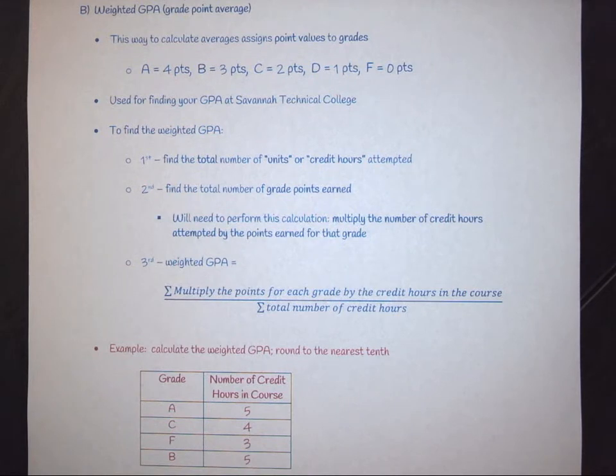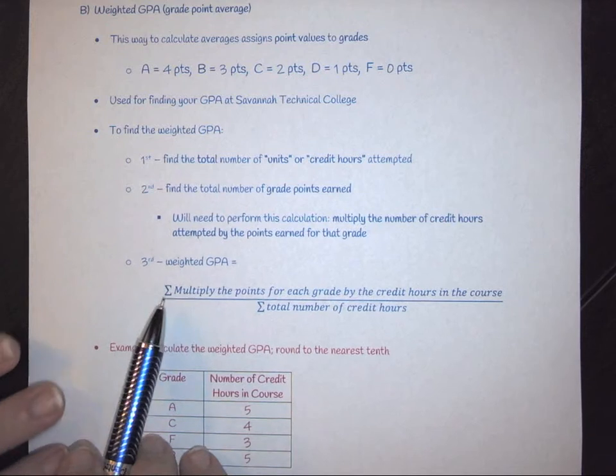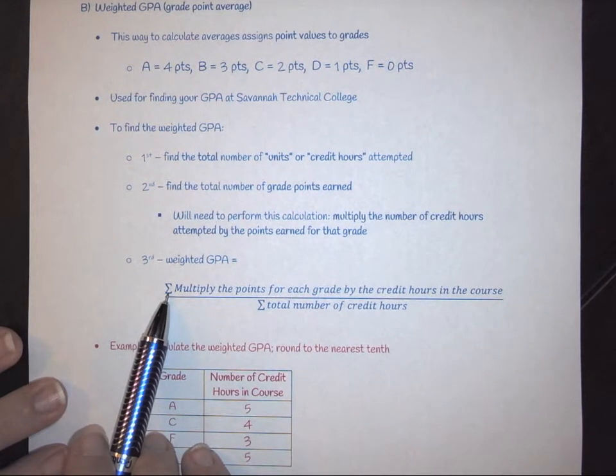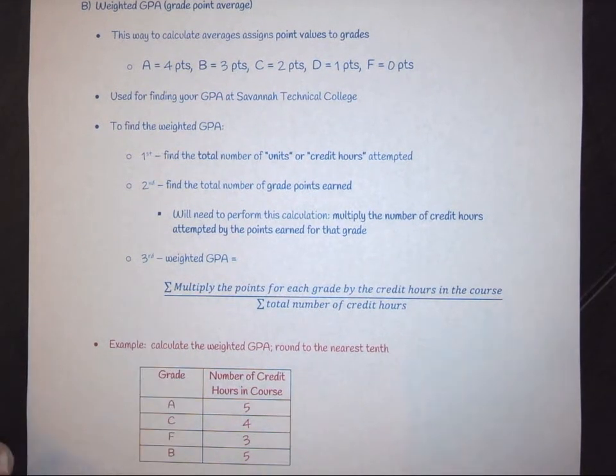Finally, you find the weighted GPA. Your weighted GPA is essentially where you find the sum of your grade points earned divided by the sum of your credit hours. This crazy little E means the sum of.